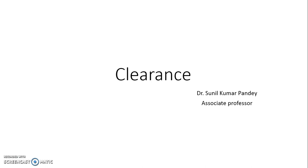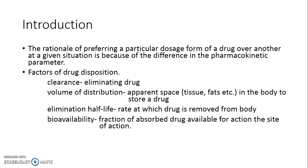Now to understand clearance, we need to understand plasma concentration and the rate of elimination. As we know, there are many drugs and many dosage forms. We need different dosage forms in different situations. If we need prompt action, we need a particular dosage form that gives a faster onset of action. We have many parameters which affect the behavior of a particular drug or dosage form, and that is called factors of drug distribution.